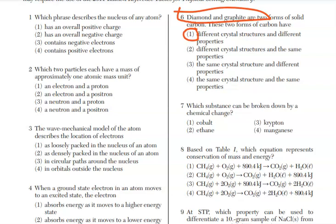For number 7, which substance can be broken down by a chemical change? Your substances are your elements and your compounds. If we're going to have something broken down by chemical change, it has to be a compound. Cobalt, krypton, and manganese are all elements. They are listed on the periodic table, and their names are on reference table S, if you forget them. Our compound is ethane, or choice 2.